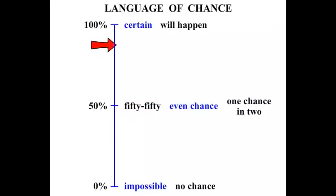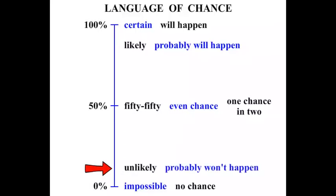Now we talk about the probability of something happening there, the chance of something happening towards there. We would say that it's likely or it probably will happen. On the other hand on our scale, way down here, we would say that chance is unlikely. In other words it probably won't happen.